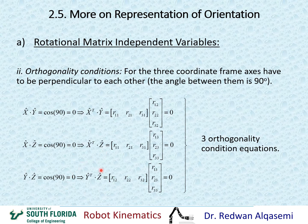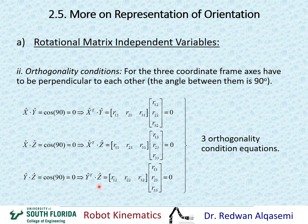For the third relationship — Y and Z — take the second column, transpose it, and multiply by the third column. If the multiplication result is zero, Y and Z are perpendicular. That gives three orthogonality conditions we can use to verify or find elements of the rotation matrix in relation to the three independent variables.